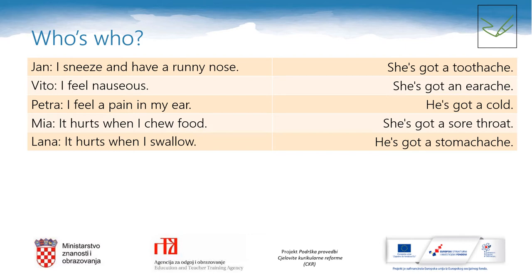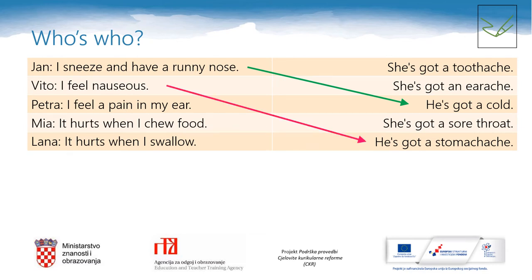Let's play the game called 'Who is Who?' First, read the children's symptoms and match them with the health problems. Stop the video now and copy the sentences in your notebook. Let's check your answers: Jan says I sneeze and have a runny nose — he's got a cold. Vita says I feel nauseous — he's got a stomach ache. Petra says I feel a pain in my ear — she's got an earache. Mia says it hurts when I chew food — she's got a toothache.